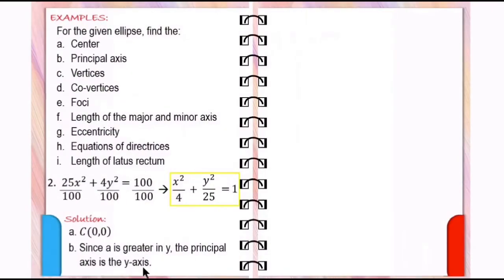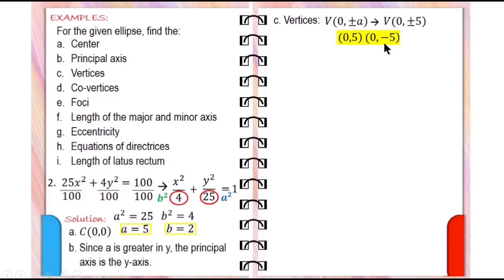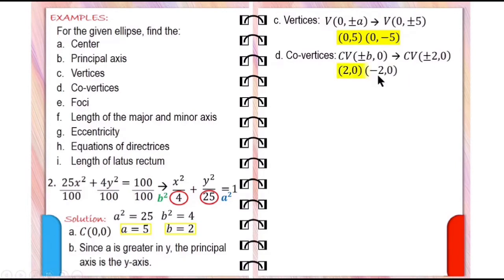But first, we need to find the value of A, B, and C. A squared is equal to 25 and B squared is 4. So A is equal to 5 — the square root of 25 is 5 — while B is equal to 2, since the square root of 4 is 2. So the vertices are (0, ±5), which means the vertices are (0, 5) and (0, -5). While the co-vertices are (±2, 0), so the co-vertices are (2, 0) and (-2, 0).